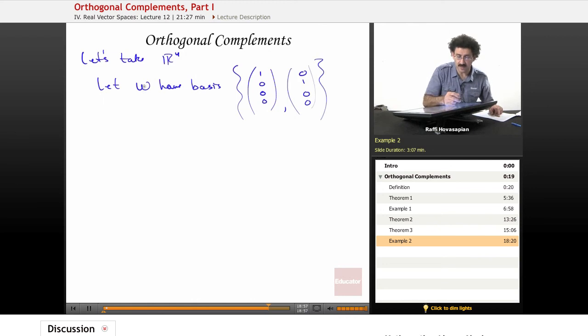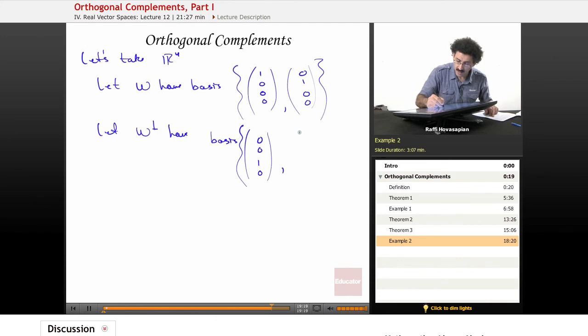So let's say that W is the subspace that has these two vectors as a basis, so it's a two-dimensional subspace. And we will let W perp have basis (0,0,1,0) and (0,0,0,1).